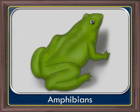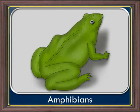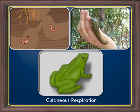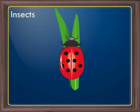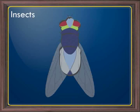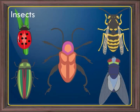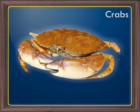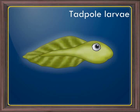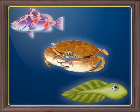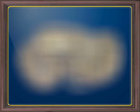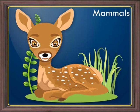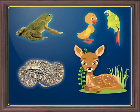Earthworm, leech, and amphibians respire through skin — this is called cutaneous respiration. Insects respire through trachea — this is called tracheal respiration. Fishes, crabs, and tadpole larvae of frog respire through gills — this is called branchial respiration. Amphibians, reptiles, birds, and mammals respire by lungs — this is called pulmonary respiration.